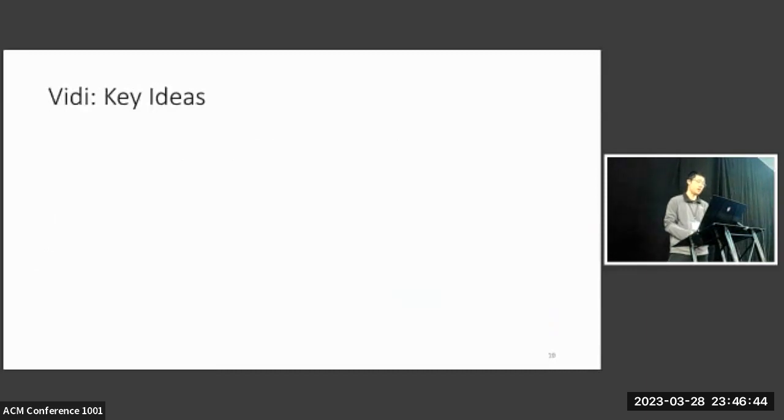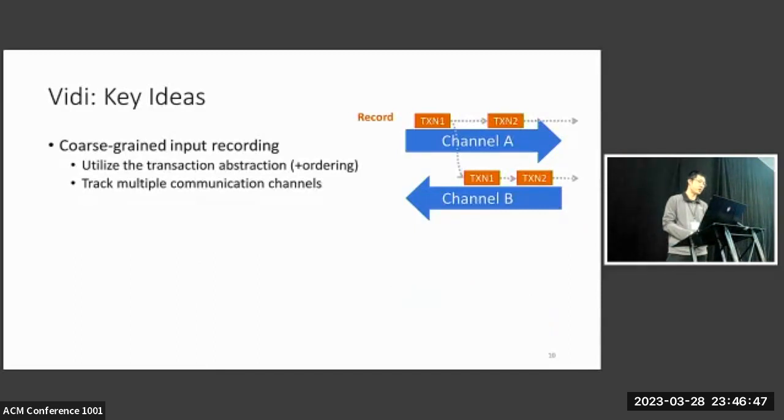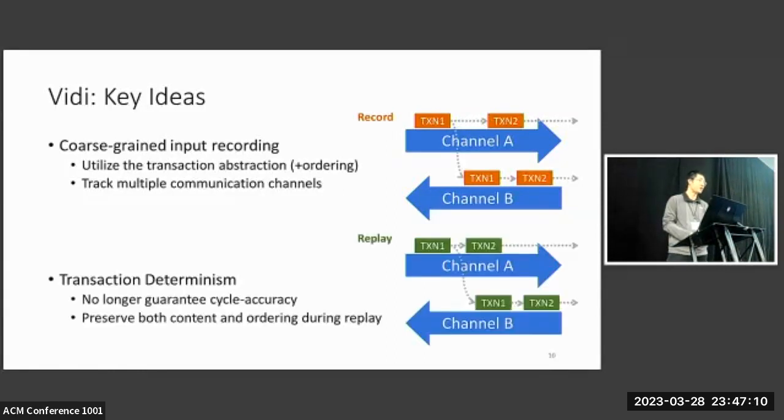Vidi proposes two key ideas. The first is cross-channel input recording, which utilizes the transaction abstraction, but also traces the ordering information while tracking multiple communication channels. In the two-channel example on the right, Vidi will basically trace the ordering information shown as dashed arrows, like transaction one happens before transaction two. The second key idea of Vidi is transaction determinism, which no longer guarantees cycle accuracy, but instead preserves both content and ordering of transactions during replay.